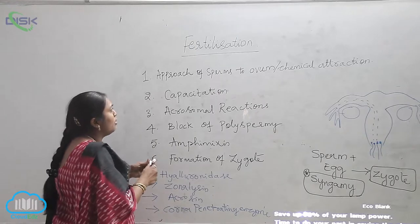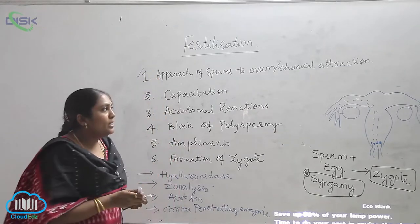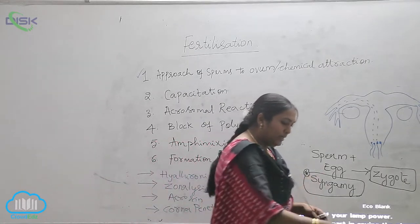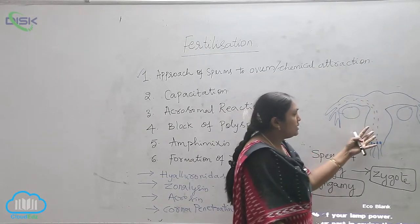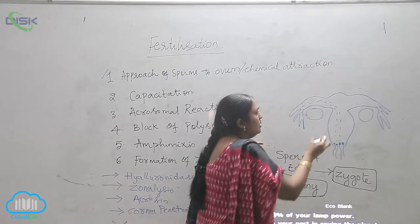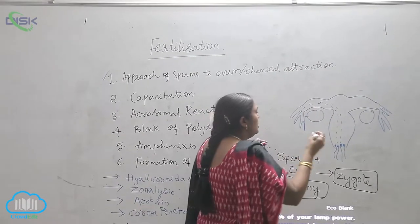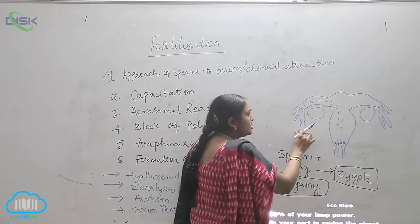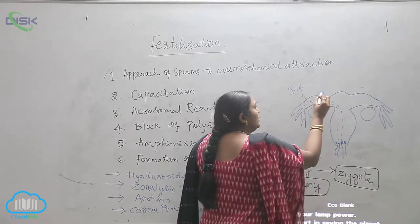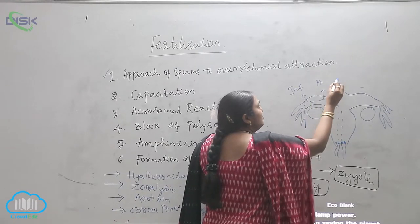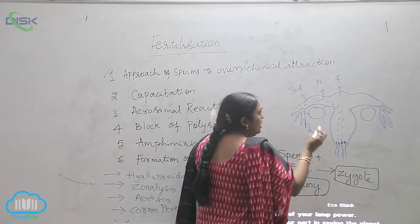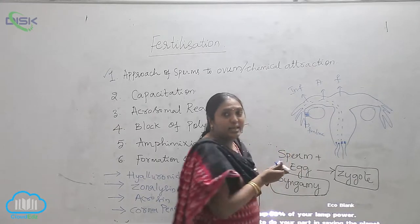The first one is the approach of sperms to the ovum, or chemical attraction. As you know, this is the female reproductive system — a pear-shaped structure. This is the fallopian tubule, which has finger-like structures. The nearer part is called the infundibulum, followed by the ampulla, and this is the fundus. These are the fimbriae, and the connection is called the ovarian tissue.